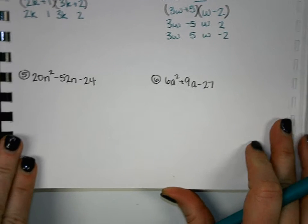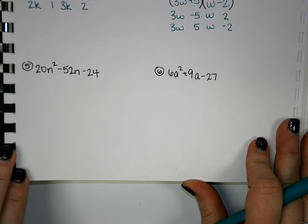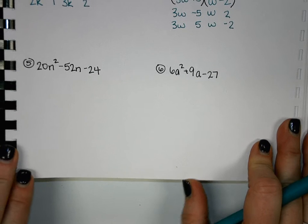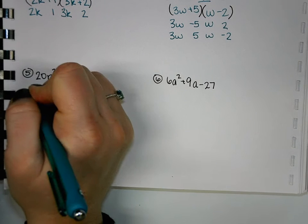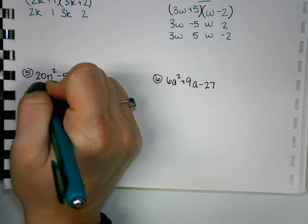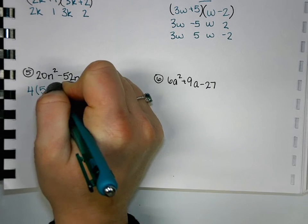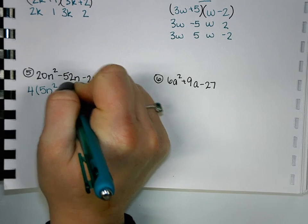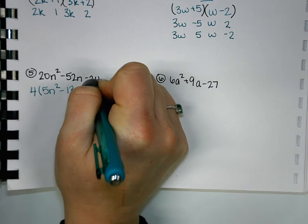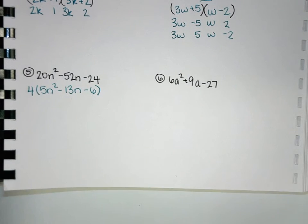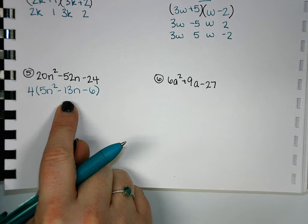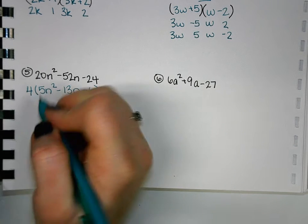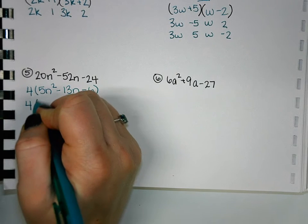Number 5. Start with GCF. So let's take out a 4. So that will give us 5n² minus 13n minus 6. Now looking at what's left inside, do we have difference of squares? No. So we're going to go to our trinomial factoring with what's inside.